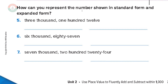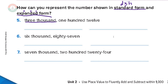Number five: how can you represent the number shown in standard form? Standard form is the number written in digits. Three thousand one hundred twelve — let's write the standard form first. Write three, then a comma, and because it's in the thousands we still have three digits to write. 112 is three digits: one, one, two. So we write them here — this number is 3112.